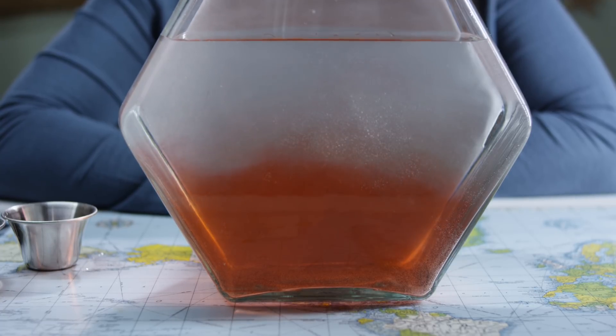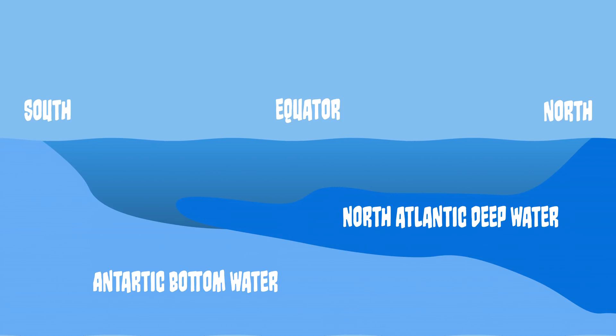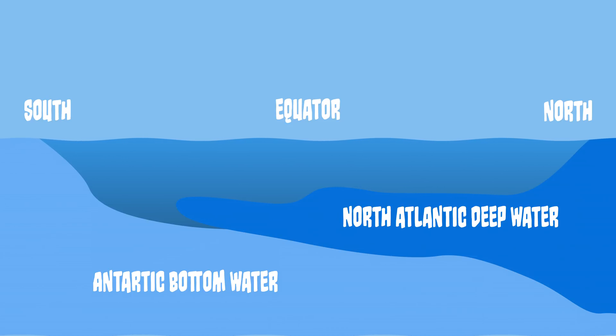In the Atlantic, salty surface water cools in the Arctic and sinks, forming a deep water mass called the North Atlantic Deep Water. A similar water mass forms in the Antarctic and is called the Antarctic Bottom Water. This mass gets its name because it is the densest of the water masses and consequently moves along the bottom of the ocean. Therefore, when the North Atlantic Deep Water encounters the Antarctic Bottom Water, it moves over the top of the bottom water since it is less dense.